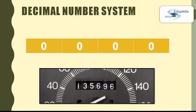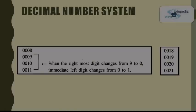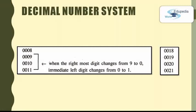So this process goes like this. The rightmost digit changes after completion of each kilometer travel like 0 to 1, 1 to 2, 2 to 3, continuing through 4, 5, 6, 7, 8, 9 and after that, the reading will be again 0.